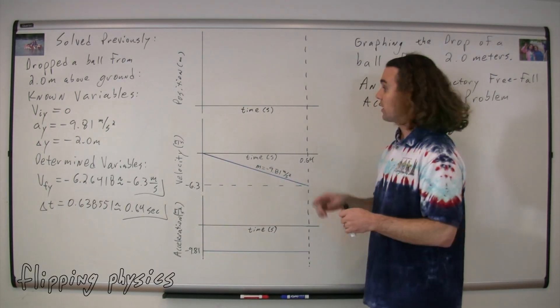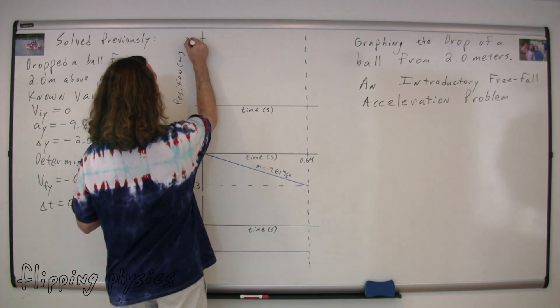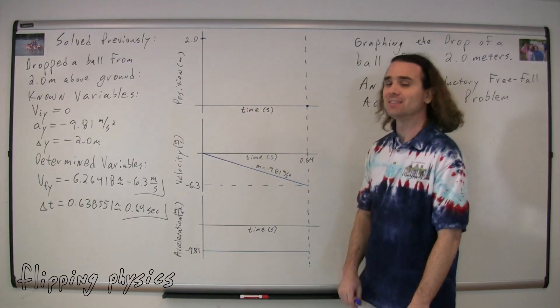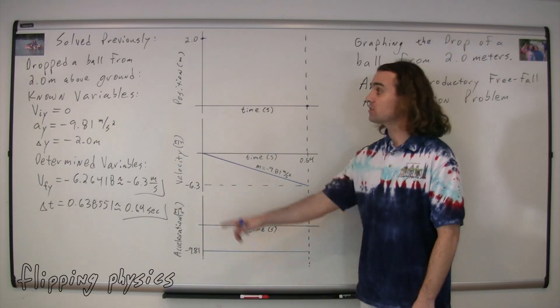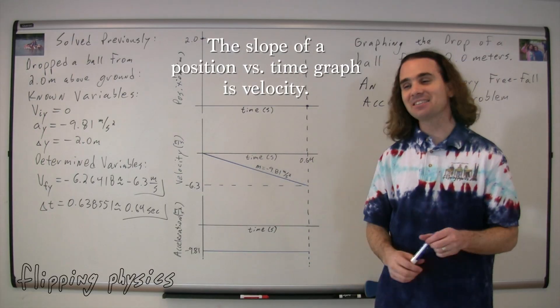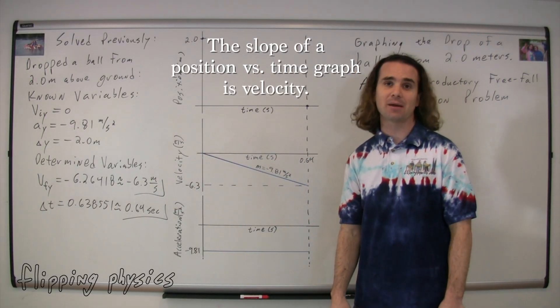Now we need to work on our position as a function of time graph. Please tell me something we know about position. We know the initial and final positions. At zero seconds, the ball is 2.0 meters off the ground, and at 0.64 seconds, the ball is on the ground, so zero meters off the ground. Right, we know where it starts and we know where it ends. We just need to know what happens between those two points. What's the slope of a position versus time graph? Velocity.